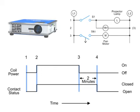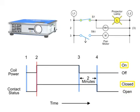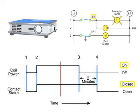Let's look at a common application of a normally open, timed open relay in the operation of a video projector. In this circuit, closing switch S1 turns on the projector bulb and activates timer coil TR1. With timer TR1 energized, normally open contact TR1 immediately closes, energizing the fan motor which controls the cooling of the projector. The projector bulb and the cooling fan remain on as long as switch S1 stays closed.